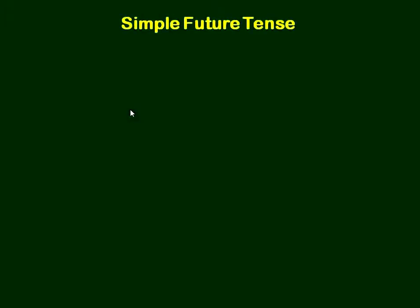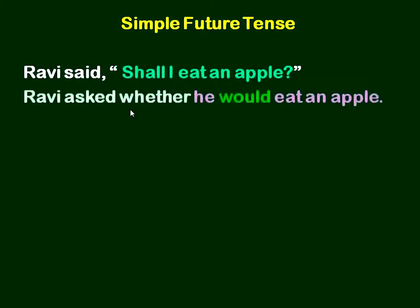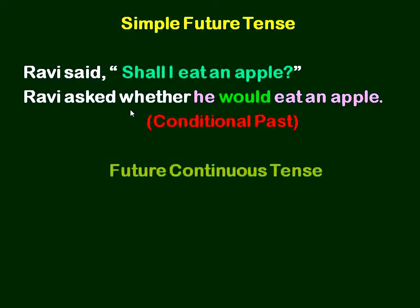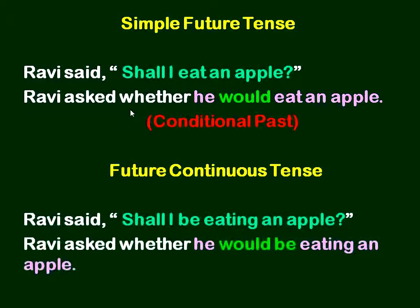Let us understand simple future tense. Ravi said, 'Shall I eat an apple?' Ravi asked whether he would eat an apple. So this is conditional past. Future continuous: Ravi said, 'Shall I be eating an apple?' Ravi asked whether he would be eating an apple. Conditional past.